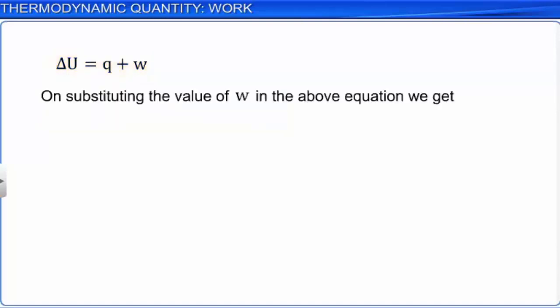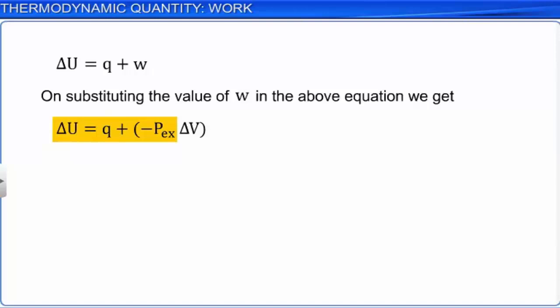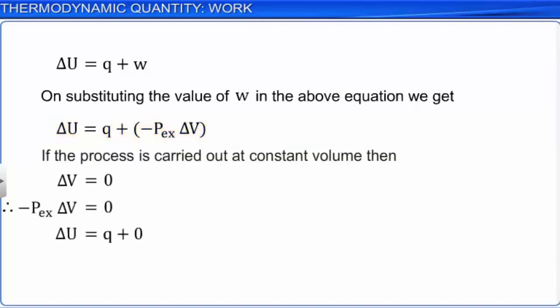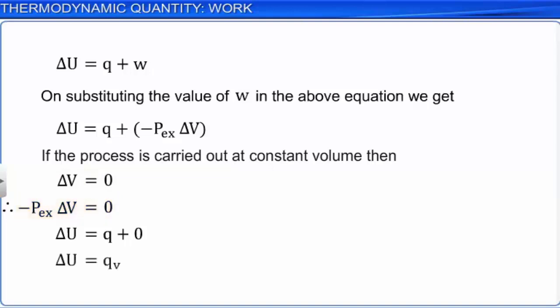On substituting the value of W in the above equation, we get: delta U = Q + (−PEX × delta V). If the process is carried out at constant volume, delta V is 0. Therefore, work done is also 0. Hence, at constant volume, delta U = QV, where QV is heat supplied at constant volume.